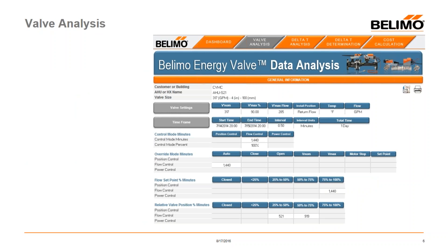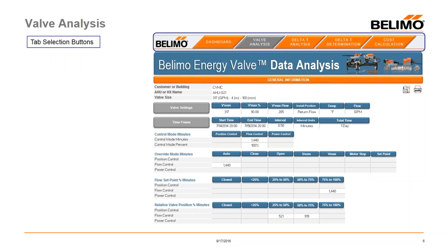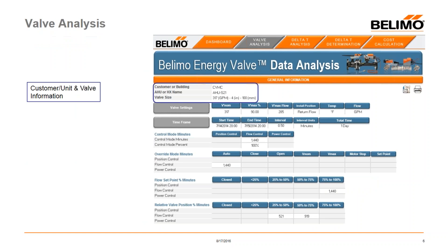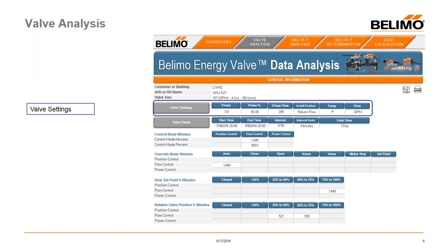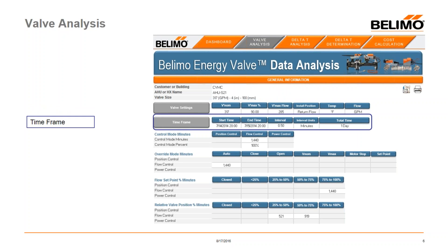The next tab is the Valve Analysis tab. Again, we start with the dashboard at the top of the screen for easy navigation between tabs. We display the customer name, air handler unit number, and flow rates for the valve so you know exactly what you're working with. We also display the valve settings — for example, a 317 gallon-per-minute valve set at 90% of its flow, giving a rated flow of 285 gallons per minute, installed on the return, with temperature in Fahrenheit and flow in GPM.